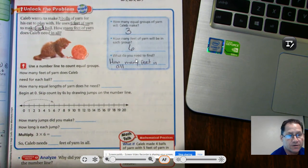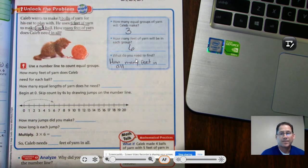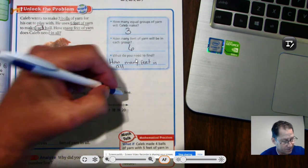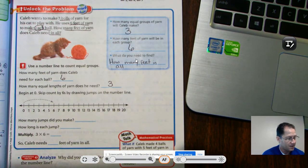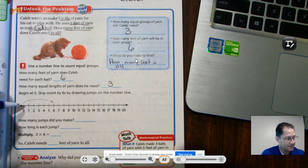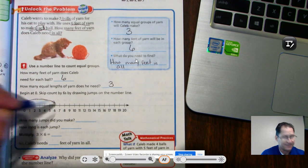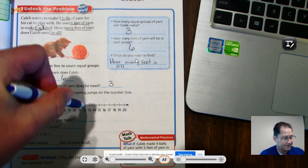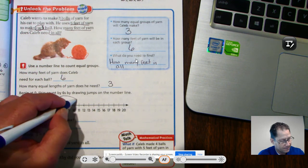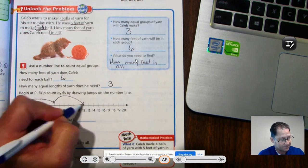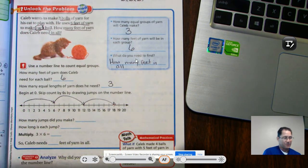So again today's strategy, we're going to use a number line to count these equal groups. How many feet of yarn does Caleb need for each ball? He needs six feet. How many equal lengths of yarn does he need? He needs three. So we're going to begin at zero and skip count by sixes by drawing jumps on the number line. So here's the first one and we stop at six. We're going to count the next six: one, two, three, four, five, six. So we stop at twelve. And then we're going to add six more: one, two, three, four, five, six. And there's our three jumps of six.